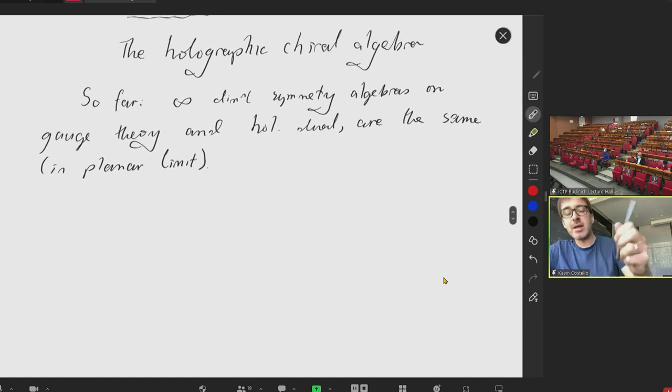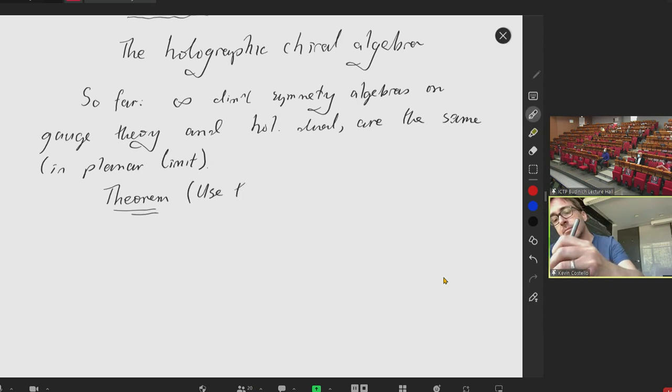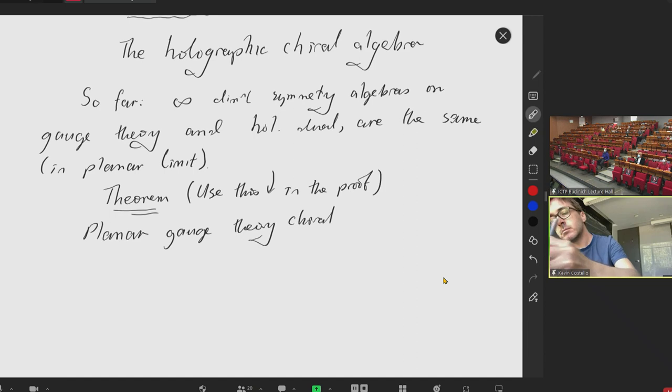And the main result we'll be able to do today - theorem - which will use this fact in the proof: the planar gauge theory chiral algebra is isomorphic to the holographic chiral algebra.